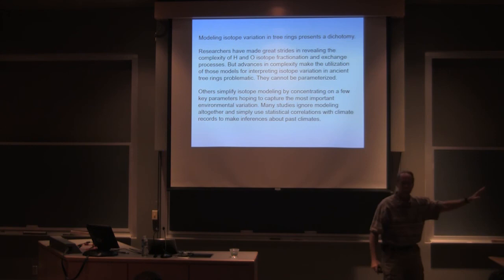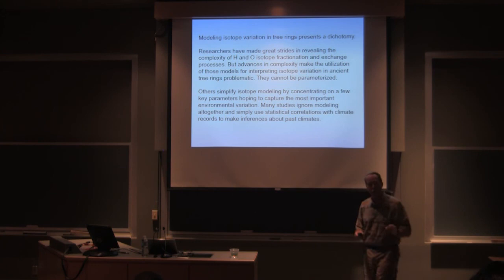This isotope correlates with summer temperature. This isotope correlates with winter precipitation. Just a straight statistical correlation. And then what do you do with that? Well, you say, now that I have the correlation, now I'm going to go back 300 years where I don't have weather stations, and I'm going to make predictions of those things. That's what the vast majority of them do. And it's valid. It's fine.